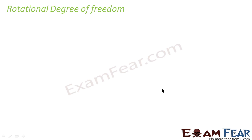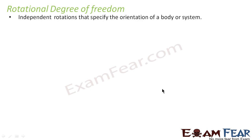Now let us look at rotational degree of freedom. Rotational degree of freedom talks about the independent rotations that specify the orientation of a body or system. As we discussed in the case of translational degree of freedom, it is only about the motion of the whole body from one point to another. But rotational degree is about the rotation of one part of the body with respect to the other part and specifying its orientation.